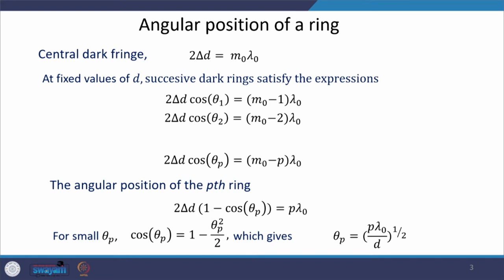In the last class we derived an expression for maxima — the condition of maxima. We also talked about the case when the separation between the two mirrors, which is δd, is reduced. We saw that the angular position of different fringes should also be reduced. This can be understood through the relation we derived: 2d·cosθ = mλ.